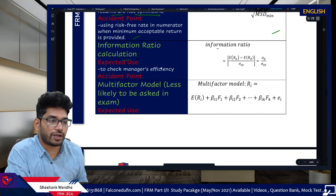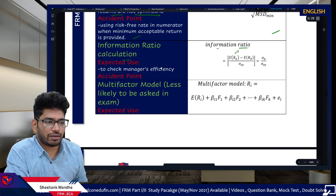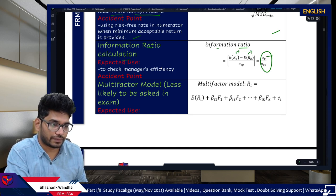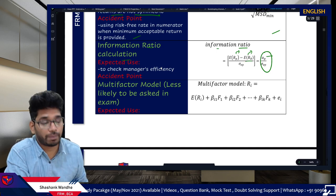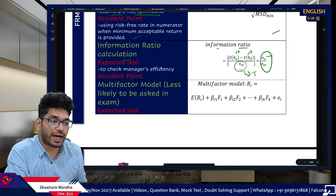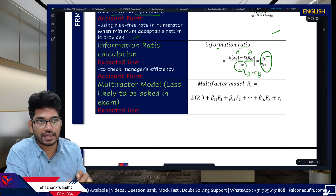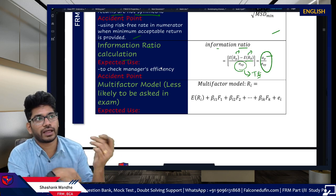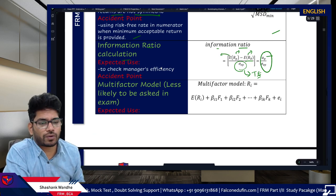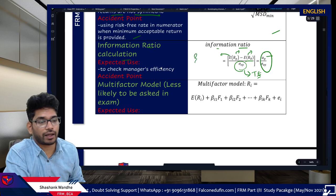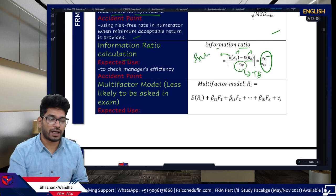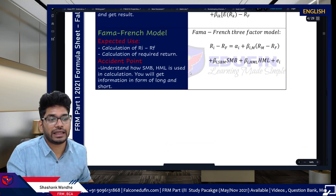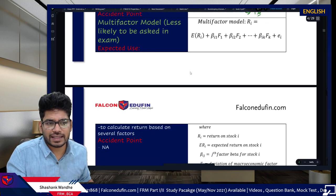The information ratio: alpha P (or ERP minus ERB, the expected return of the benchmark) divided by the tracking error (TE). Tracking error will be provided in the exam. GARP may also phrase this as 'excess return of the portfolio over the benchmark' — that entire phrase is the numerator. Remember that distinction when reading the question.